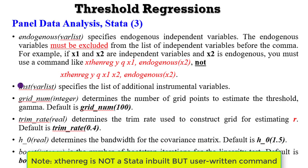If you want to use more instruments, as mentioned before, you invoke the instrument option. STATA also uses the grid number. The default is 100, and the grid option determines the number of grid points that STATA will use to estimate the threshold.